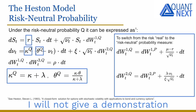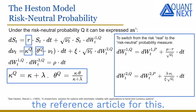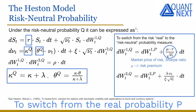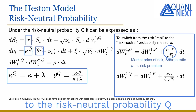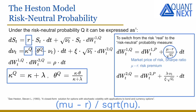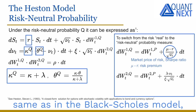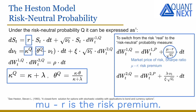I will not give a demonstration in this video — you can refer to the reference article for this. To switch from the real probability P to the risk-neutral probability Q for the price process, we add a drift to the Brownian motion under P equal to the difference between Mu and R divided by the volatility, the square root of Nu. This is the market price of risk, or Sharpe ratio, same as in the Black-Scholes model. Mu minus R is the risk premium.